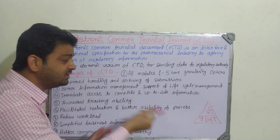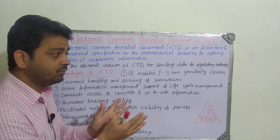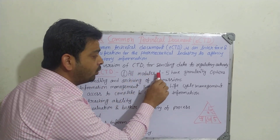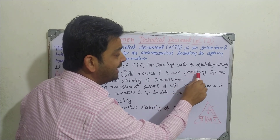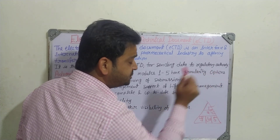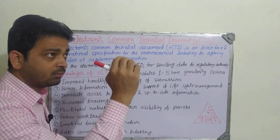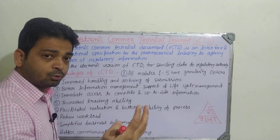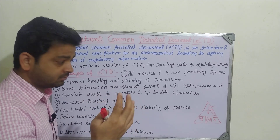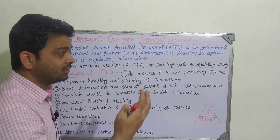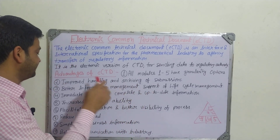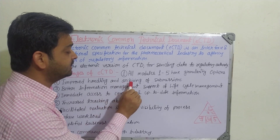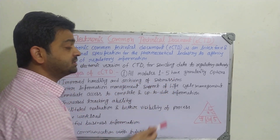What are the advantages — why should we go for eCTD even though we are having CTD? First, all modules one to five have the granularity option — wherever we are clicking, you will get the upload space and all other filing information one by one.